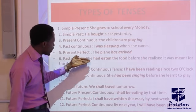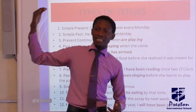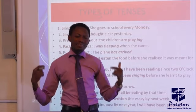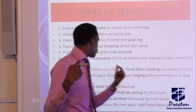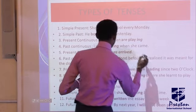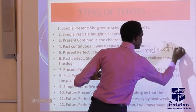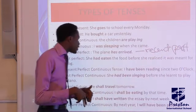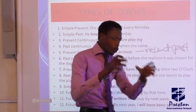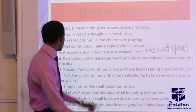The present perfect talks about an action that started in the past and ended at some point in the recent past — meaning when this action ended, it's not too far from the present time. For example, 'The plane has arrived' — it's like we have just seen the plane arriving now. So it's talking about an action that was completed in the recent past.